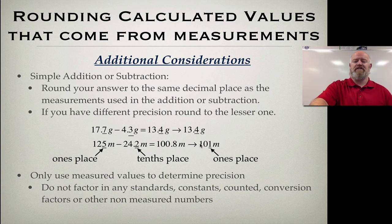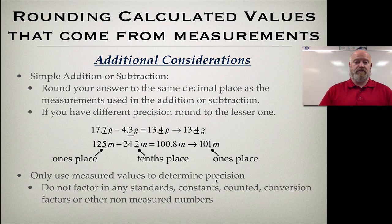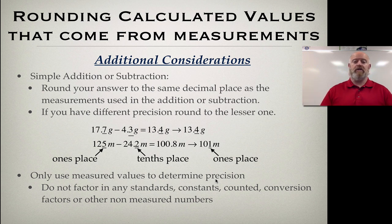Students sometimes don't like this because it feels like you're losing precision — and you are. But because one number only measured out to the ones column, we can't report the final answer any more precisely than the ones column. The last consideration: only use measured values to determine precision. If a number in the math has not been measured, it should not limit your precision at all.